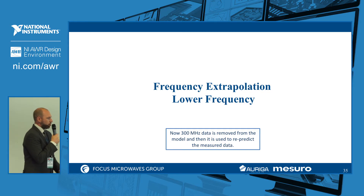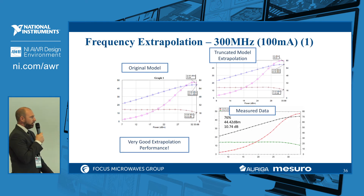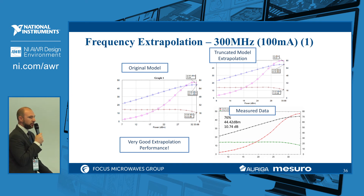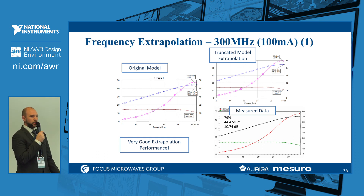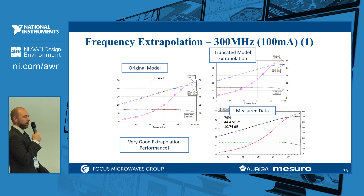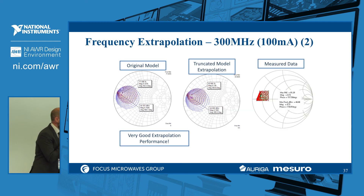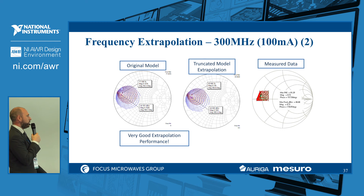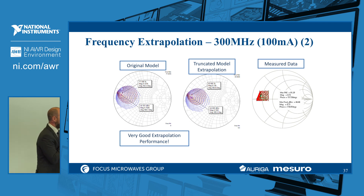For frequency extrapolation at the low frequency end — simulating 300 MHz with a truncated model — we have very good extrapolation performance. The model contains input power levels up to around 34–36 dBm, and here we simulate up to 32 dBm. Gain, output power, and efficiency fit very well to the measured results, and the same holds in the impedance space with very good match in maximum power added efficiency and output power.